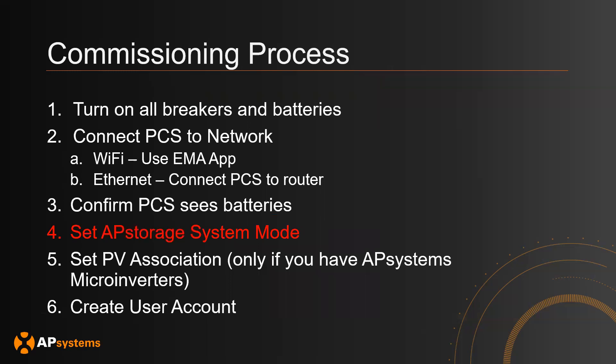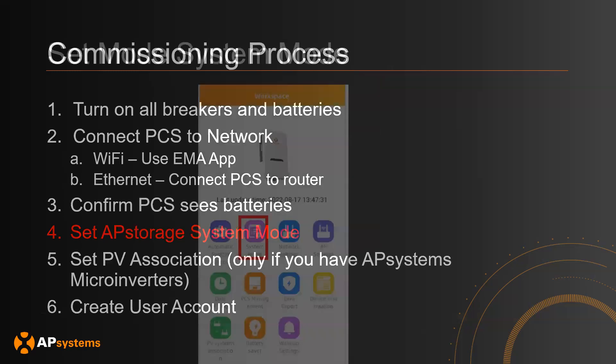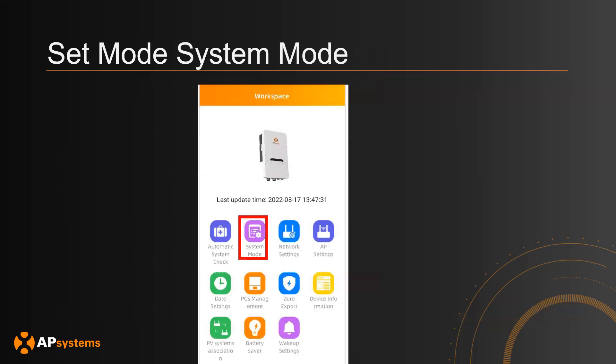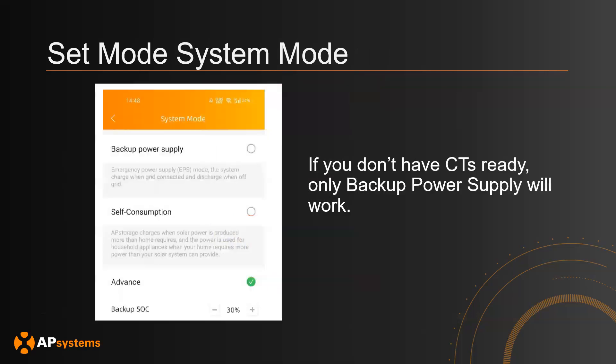Next, we will set the AP storage system mode. Go to the Workspace page and click System Mode. There are three options: Backup, Self-Consumption, or Advance. Note that if you do not have CTs installed, only Backup power supply will work. If you have CTs installed, then Self-Consumption and Advance will be available functions.